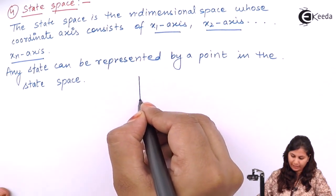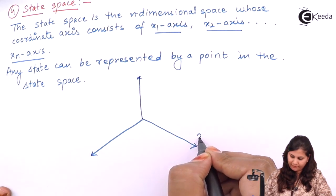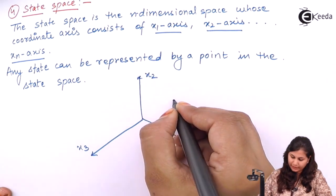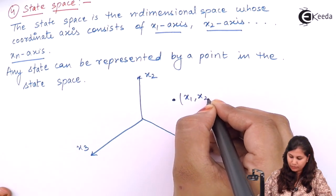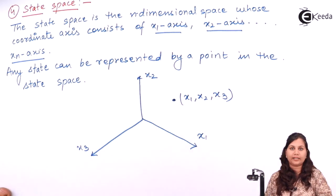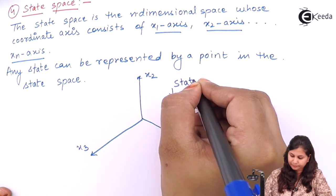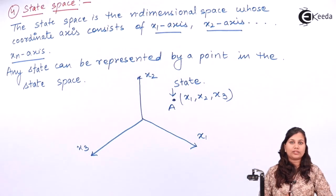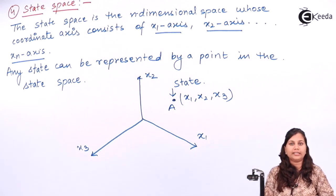For example, if we have three variables it will be a three-dimensional space with axes x1, x2, and x3. Any state will be represented by a point having coordinates x1, x2, and x3, and that point represents the state of the system at any time T. These are the basic terminologies used in the state space technique: state, state variables, state vector, and state space.